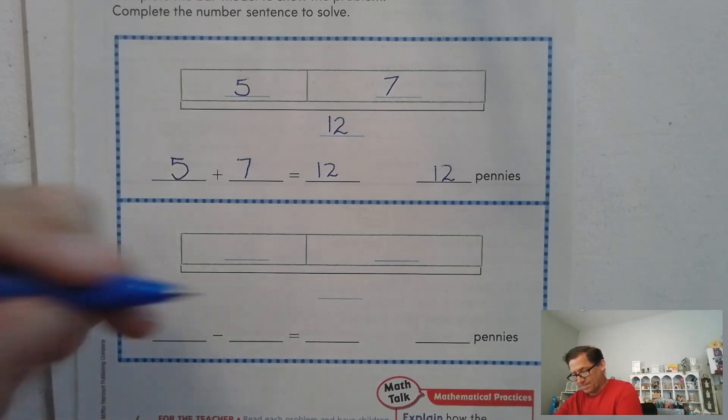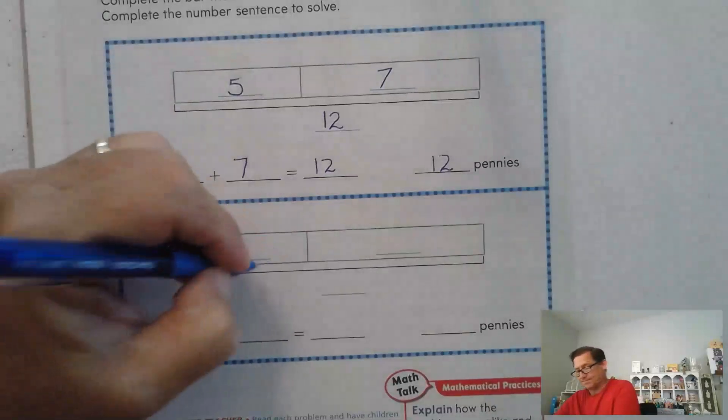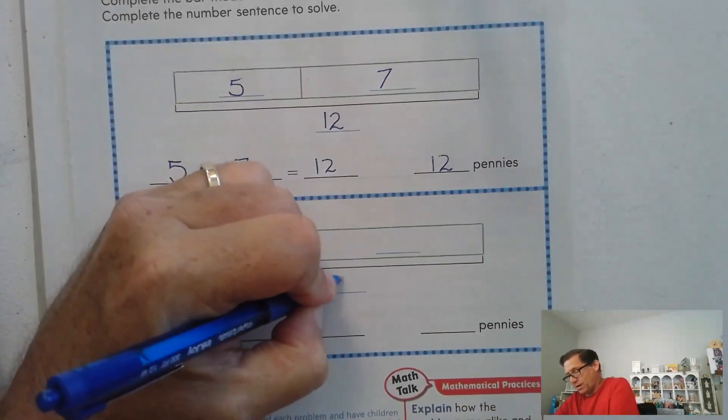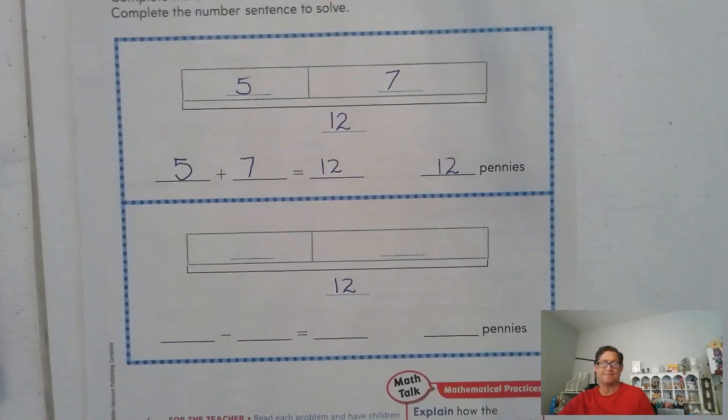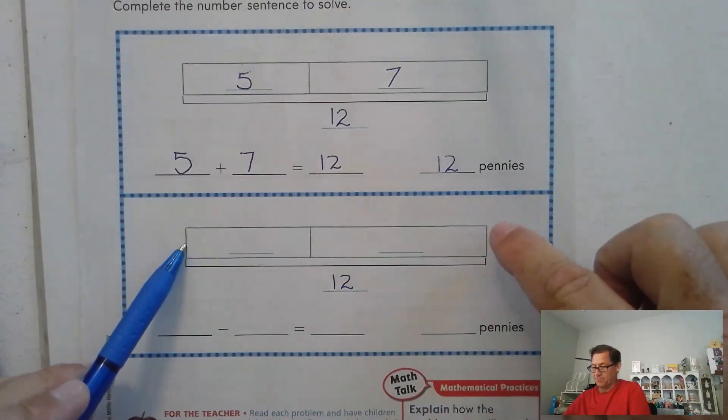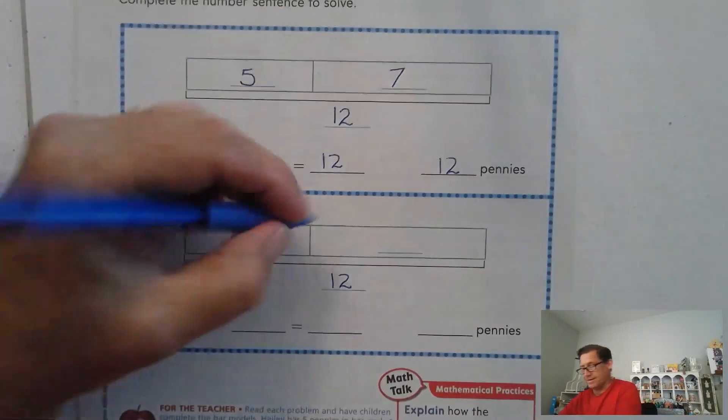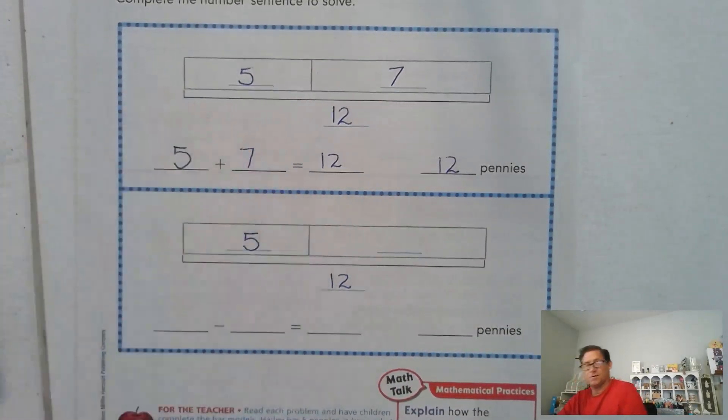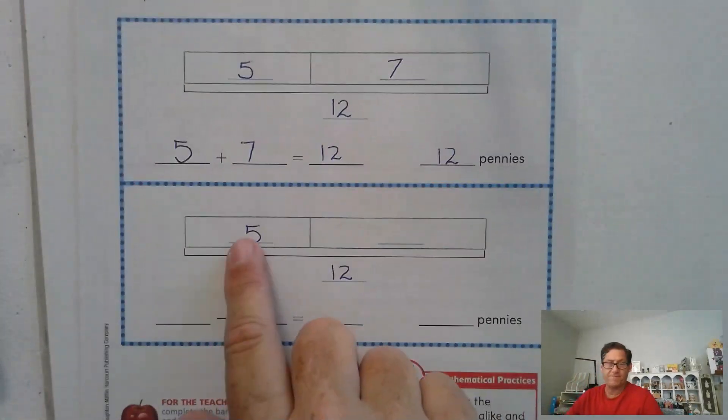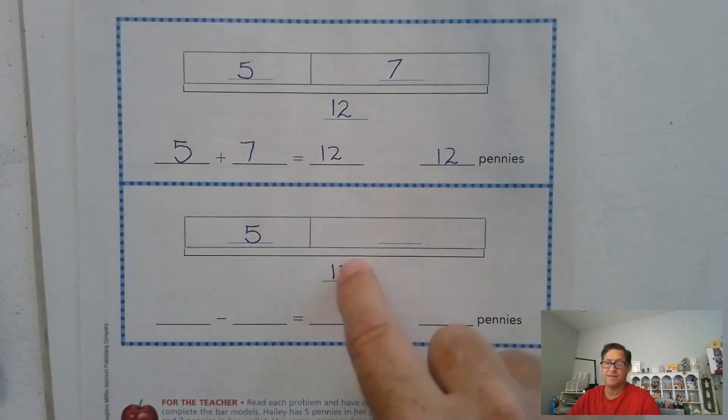All right, this is one possibility. So we said he had twelve total pennies. So remember, this one plus this box equals twelve. That's what the bracket means. He gave five away. So we know that five plus something equals twelve.